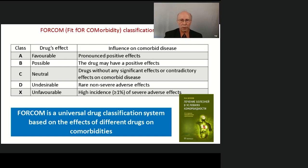The FOCAM classification unites the above-mentioned systems and divides drugs into five classes based on their influence on comorbidities. Class A includes drugs with a pronounced positive effect on comorbid disease. Class B includes drugs that may have mild positive effects. Class C includes drugs without any significant effect, or with contradictory effects. Class D consists of drugs with rare, non-severe adverse effects. Class X includes drugs with severe, life-threatening adverse effects.